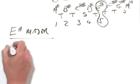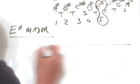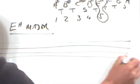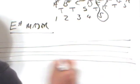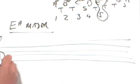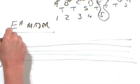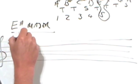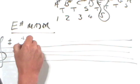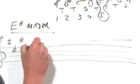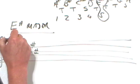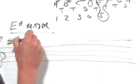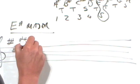So let's make a stave. Treble clef. Loads of sharps. Father, Charles, goes, down, and enters, battle, Father, Charles, goes. And we'll predict that the next one will be a D sharp there.